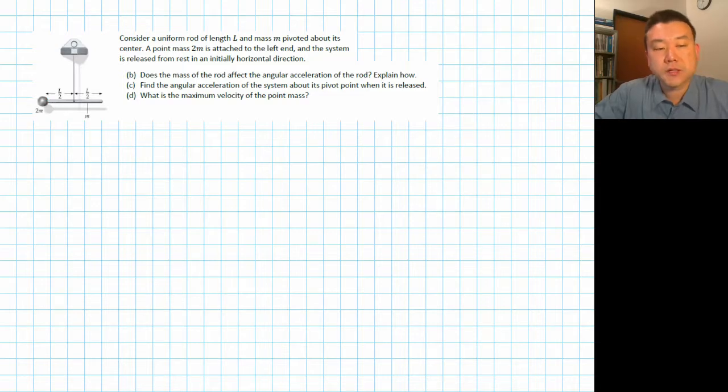There's one additional object here. I'm going to first write down the rotational inertia of the entire object, including the 2M mass at the end, because I think that'll probably be needed at some point.